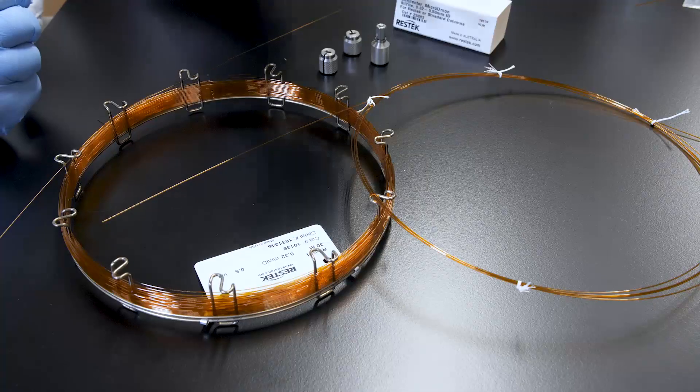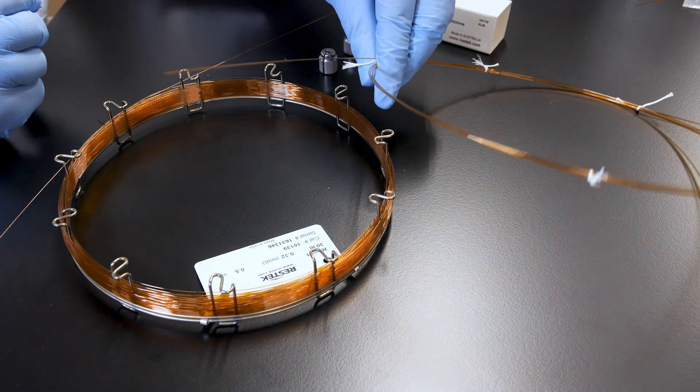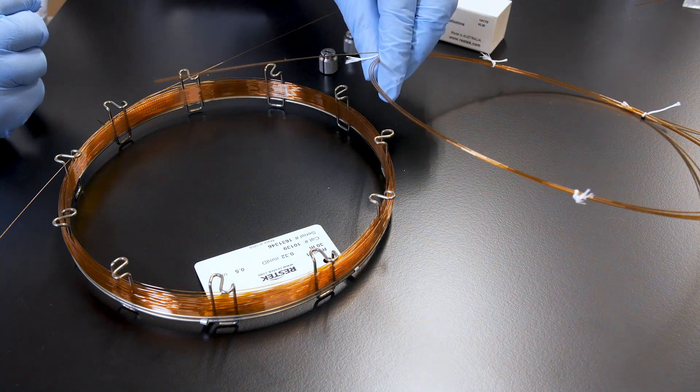Now, let's focus on the columns. If you are connecting columns with different IDs, always begin with a column with the larger ID. Since the larger ID column will not fit into the smaller ferrule opening, installing the larger column first ensures the correct end of the ferrule will be used for both columns.